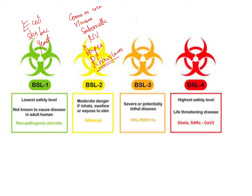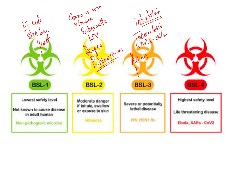BSL 3 covers indigenous or exotic microbes that may cause serious or potentially lethal diseases through inhalation. Examples include HIV, H5N1 (avian influenza), tuberculosis, SARS-CoV-2 — which is very important — avian influenza, and plague (Yersinia pestis). These are all examples of BSL 3 organisms.